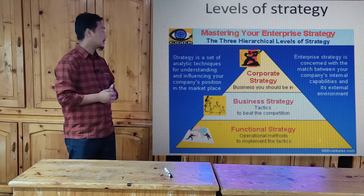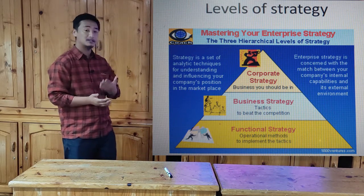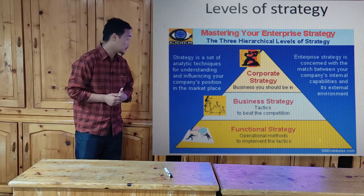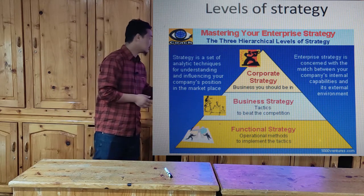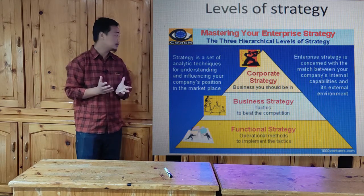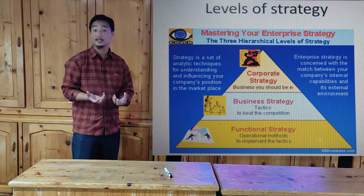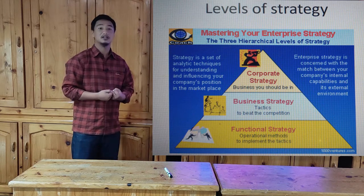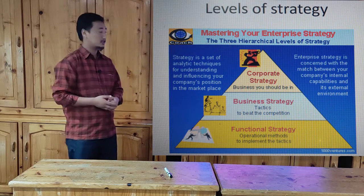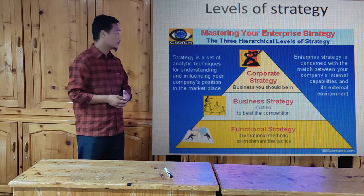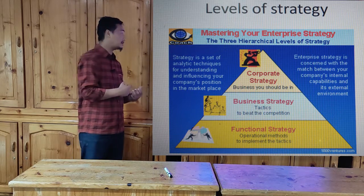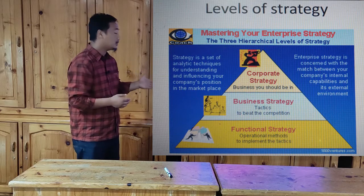Today we start off with levels of strategy and dig deep into them. There are three levels of strategy: we have the corporate strategy, we have business strategy, and then we have operational methods. Let us look into what corporate strategy is all about. Corporate strategy defines what business our organization or enterprise should be in, and as we discussed, strategy is a top-level management decision.